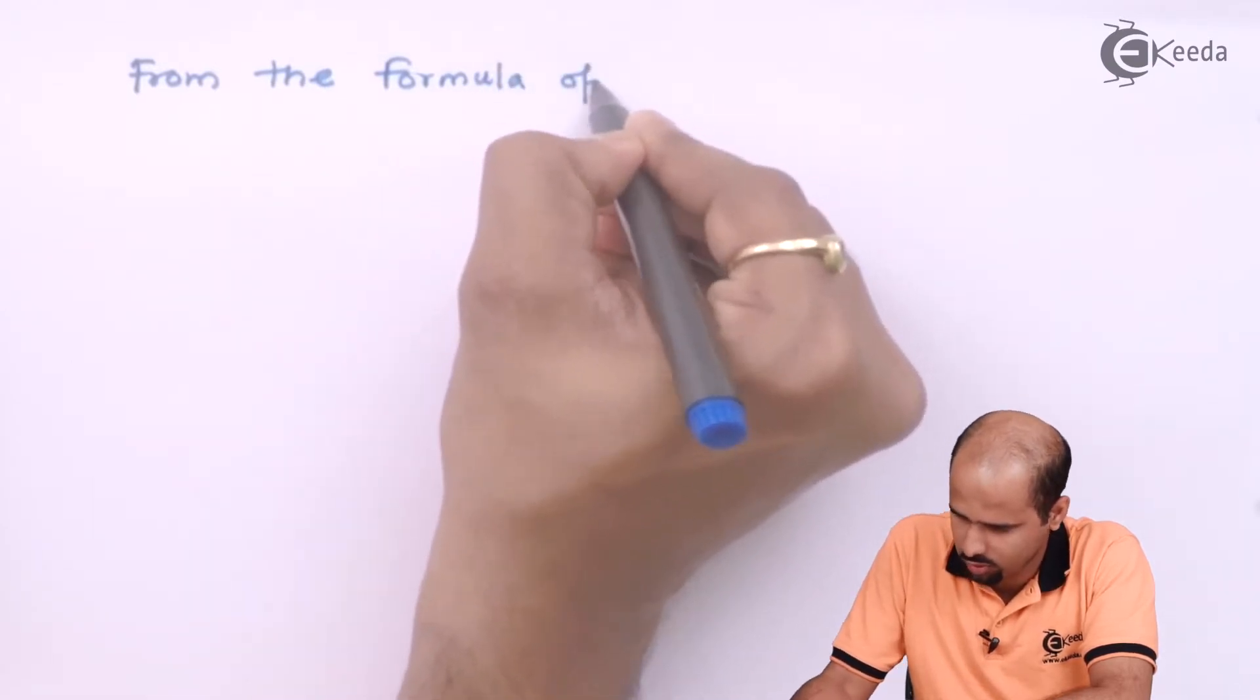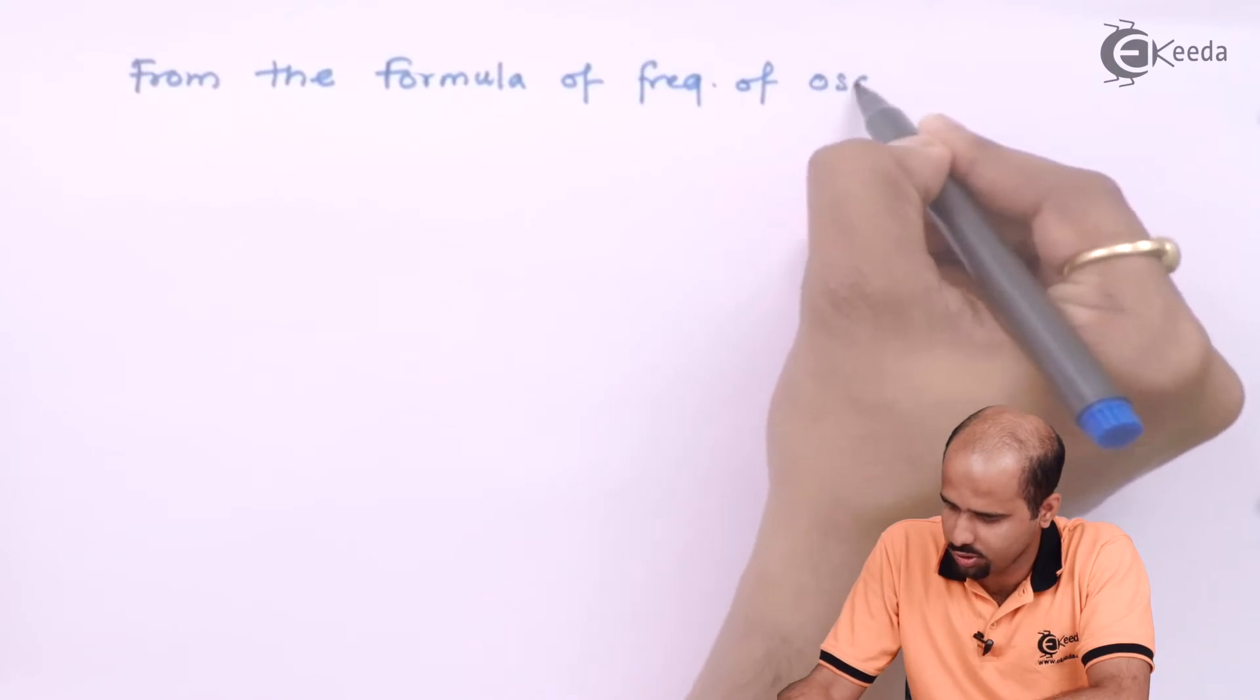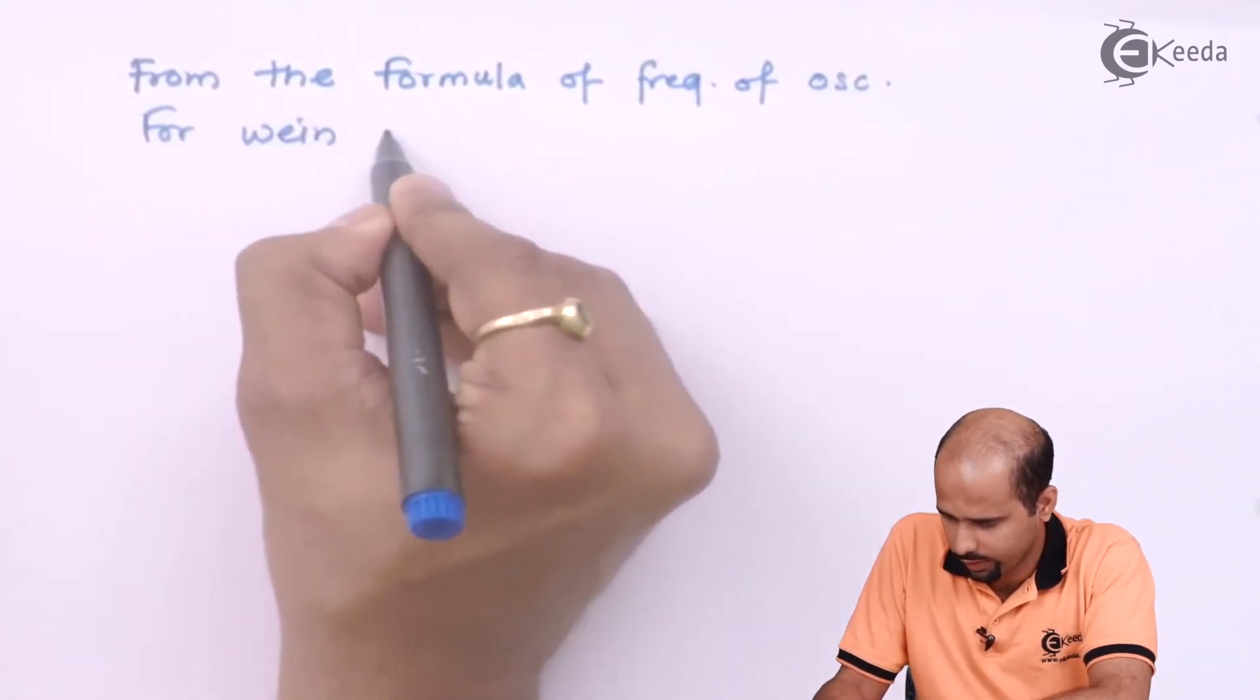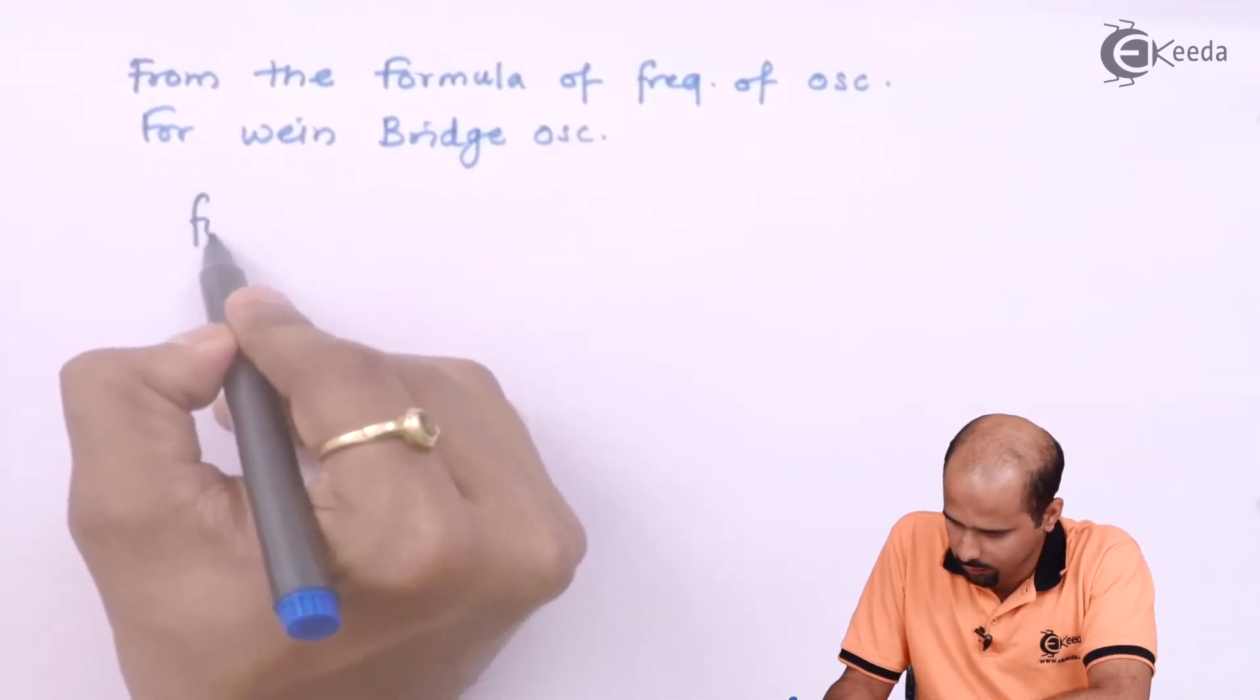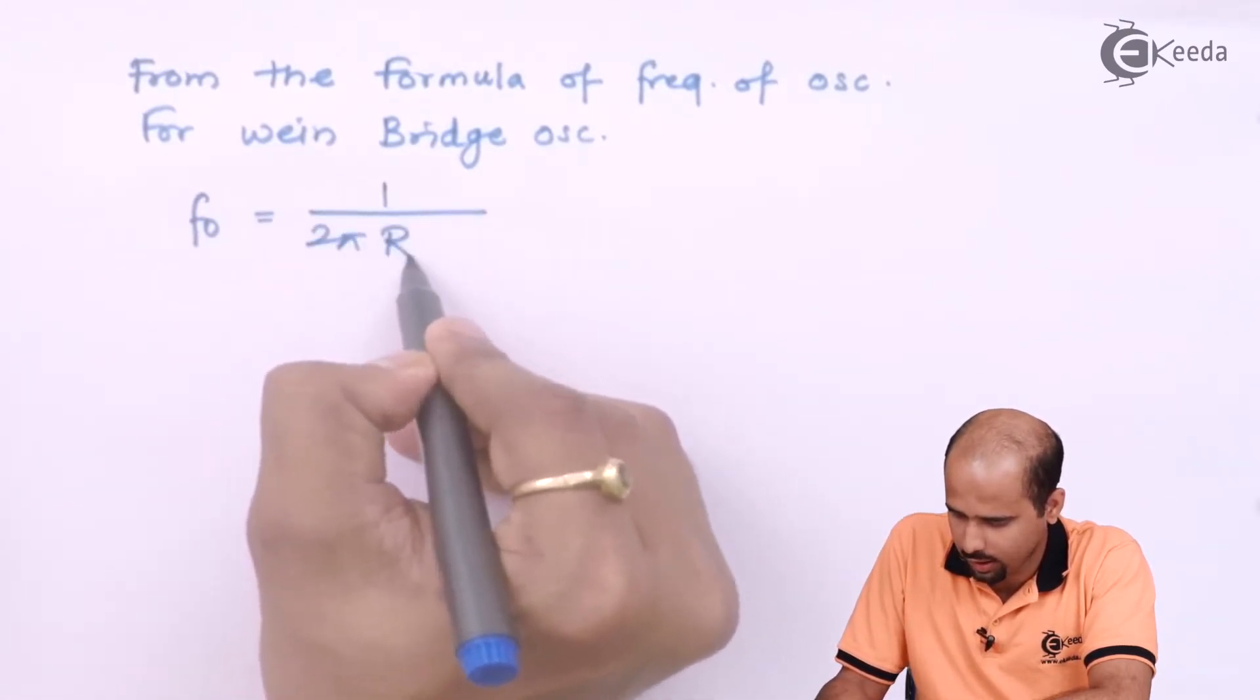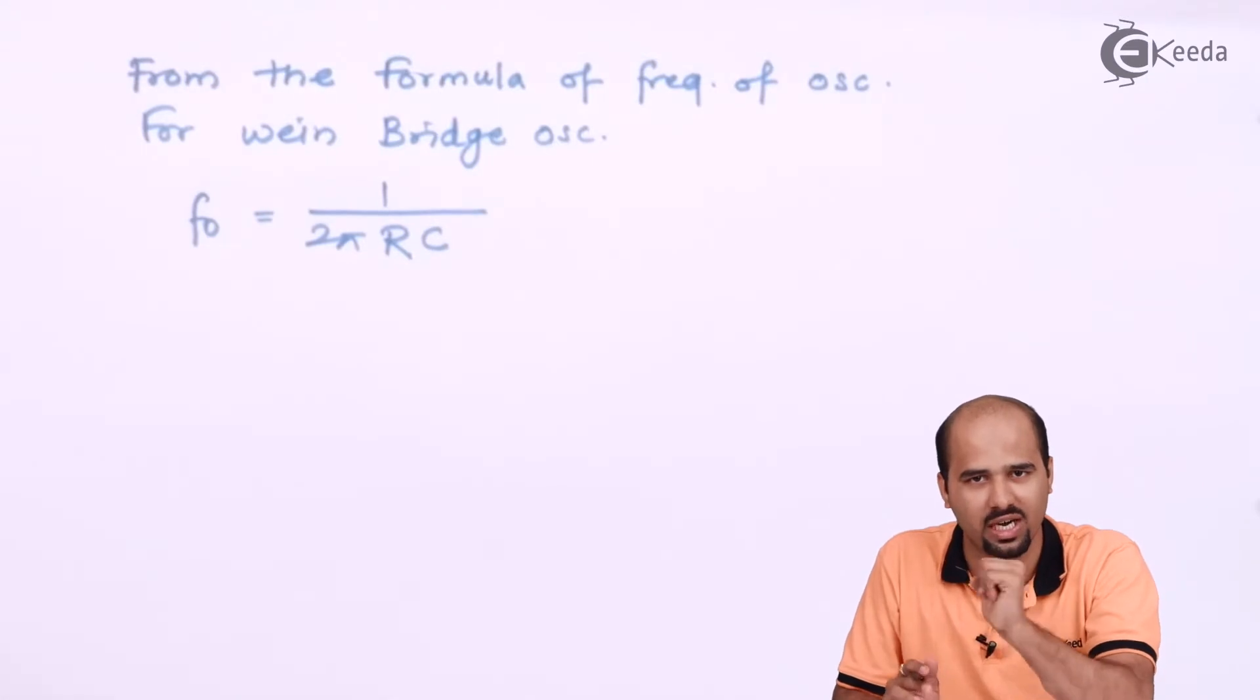From the formula of frequency of oscillation for Wien bridge oscillator, Fo is equal to 1 upon 2 pi RC. R value is 1k, C value is 0.47 microfarad and just put the value, get the answer.